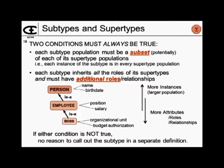The subtype also has to have additional roles, play additional relationships, or be handled differently in some way — otherwise you wouldn't call it out as a subtype. For example: I've got a person, and name and birthdate are attributes of a person. An employee is a special role that a person plays. An employee has attributes of position and salary. Then there might be a subset of employees called boss. A boss is an employee, and for a boss I might indicate which organizational unit they're in charge of and what their budget authorization is. This would be considered the subtype-supertype hierarchy.